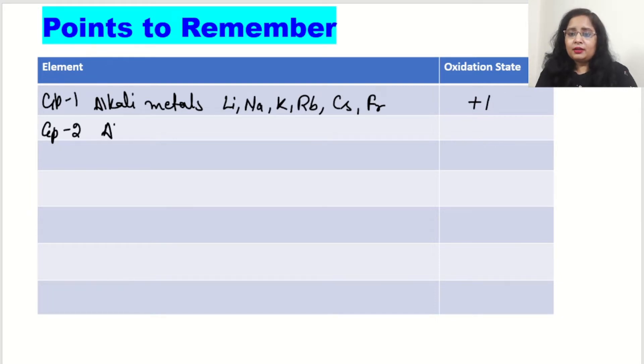Second point is group 2, i.e. alkaline earth metal. The names are beryllium, magnesium, then calcium, strontium, then barium and radium. For these, oxidation number is always fixed and it is plus 2.